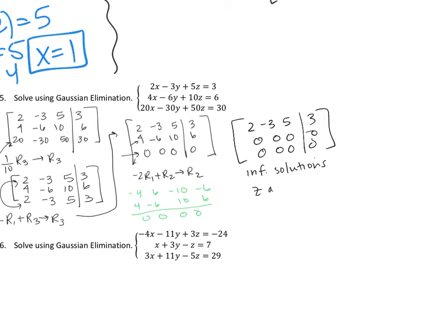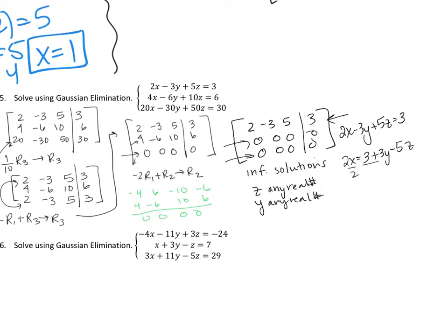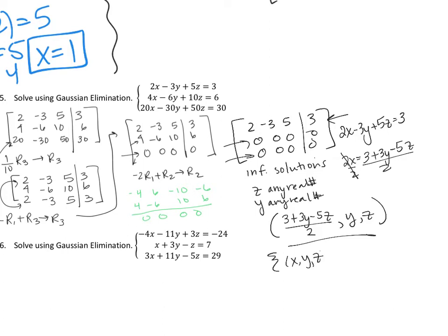We let z and y both be any real number. From the remaining equation, 2x minus 3y plus 5z equals 3. Solving for x by moving everything to the other side and dividing by 2 gives x in terms of y and z. The solution set can be expressed as all ordered triples (x, y, z) satisfying 2x minus 3y plus 5z equals 3 — meaning all points on that plane.